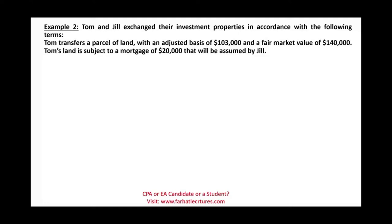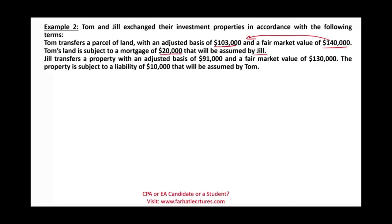Let's look at another example. Tom and Jill exchange their investment properties. Tom transfers a parcel of land with an adjusted basis of $103,000 and a fair value of $140,000. Tom's land is subject to a mortgage of $20,000 that will be assumed by Jill. Jill transfers a property with an adjusted basis of $91,000 and a fair value of $130,000, also subject to a $10,000 mortgage to be assumed by Tom.